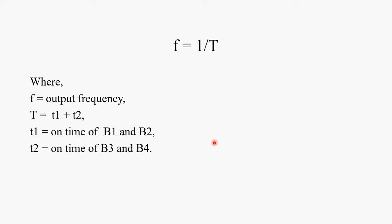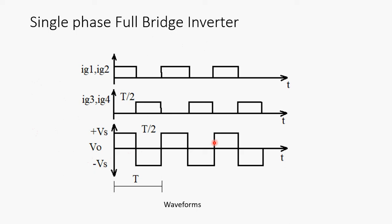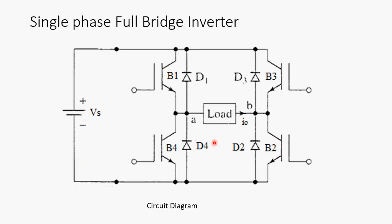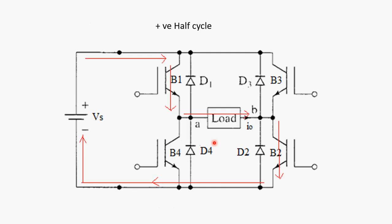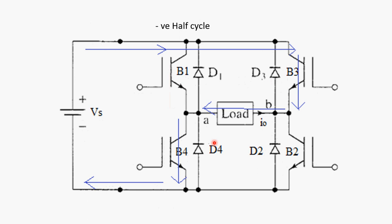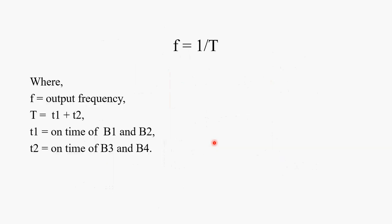This will give you output frequency equal to 50 Hz. Like this, you can get the desired frequency at the output in case of single phase full bridge inverter. This is positive half cycle, this is negative half cycle. These are the waveforms and this is the output frequency formula. Thank you.